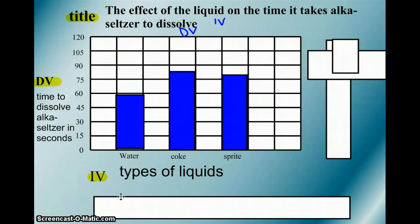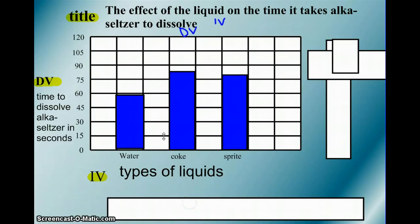Here's the label for the x-axis, the independent variable. We have types of liquids and then we have each type. It's very important to have both of these. You need a label for each bar and you need a label for the x-axis. So that is it.